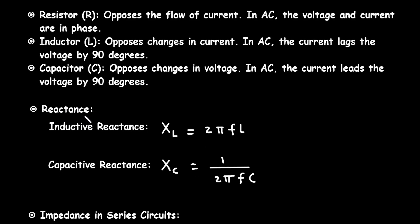Next is reactance. There are two types: inductive reactance XL and capacitive reactance XC. Inductive reactance XL = 2πfL, where X represents reactance and L represents inductive. Capacitive reactance XC = 1 / (2πfC), where C represents capacitive.